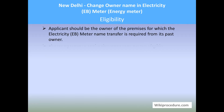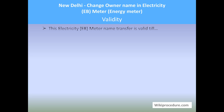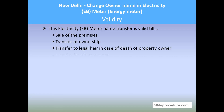Regarding eligibility, the applicant must be the owner of the premises for which the electricity EB meter name change is required from its past owner. Electricity services under disconnection are not eligible to apply. Regarding validity, the electricity EB meter name transfer is valid until the sale of the premises, transfer of ownership, transfer to a legal heir in case of death of the property owner, or transfer for any other reason.